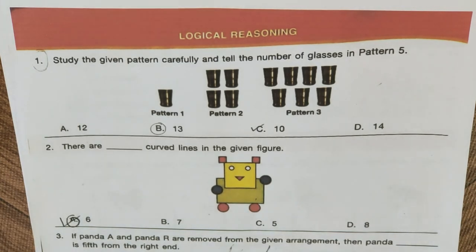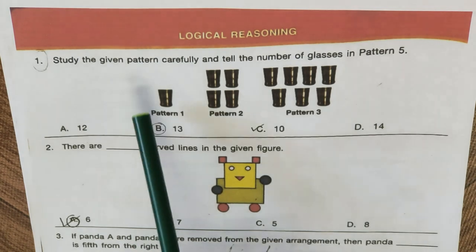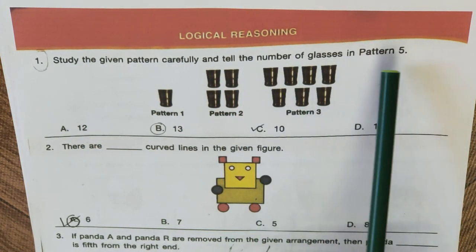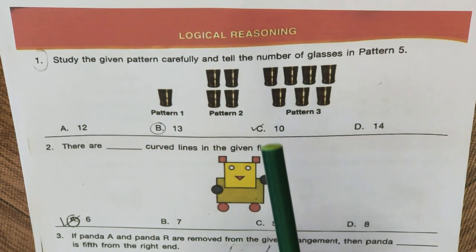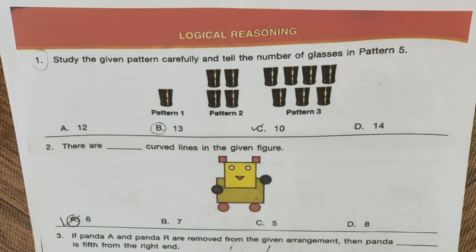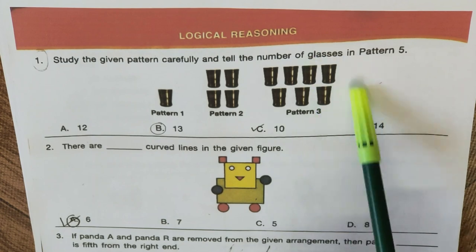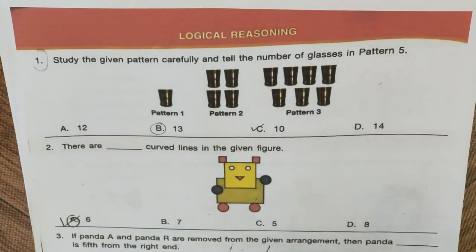Question 1: Study the given pattern carefully and find the number of glasses in Pattern 5. Pattern 1 has 1 glass, Pattern 2 has 4 glasses, Pattern 3 has 7 glasses — increasing by 3 each time. Pattern 4 would be 7+3=10, and Pattern 5 would be 10+3=13. Hence the answer is B. My students incorrectly marked C.